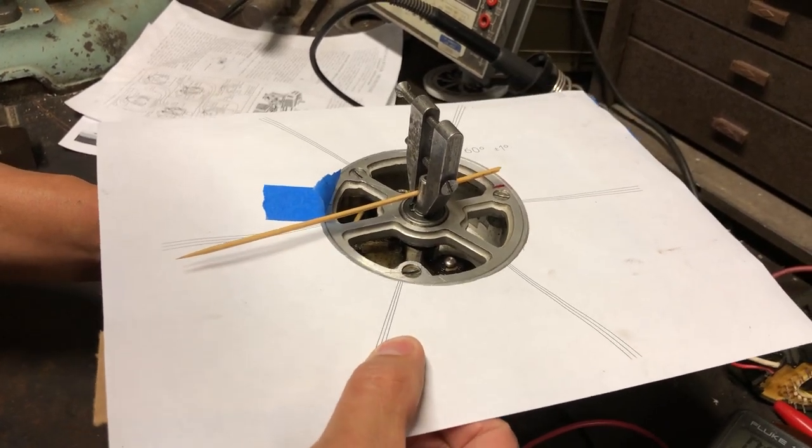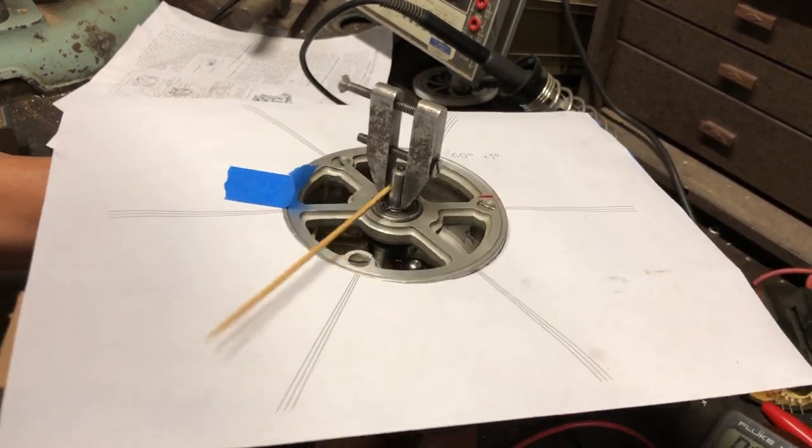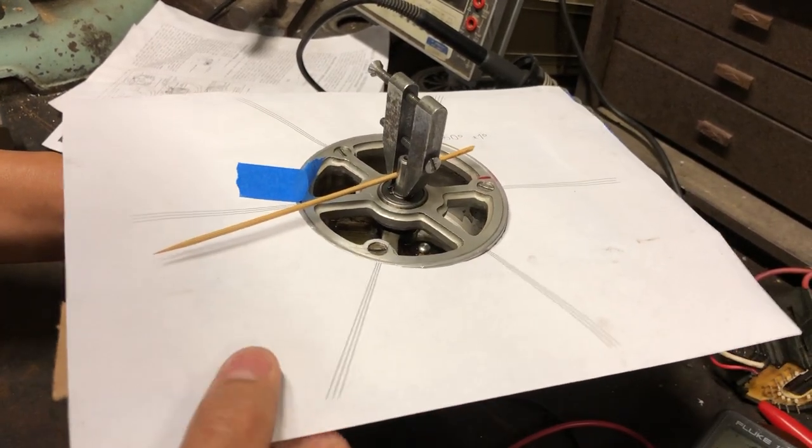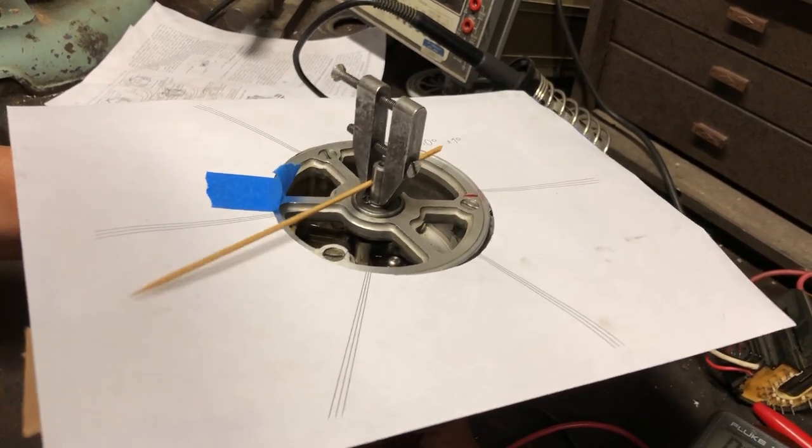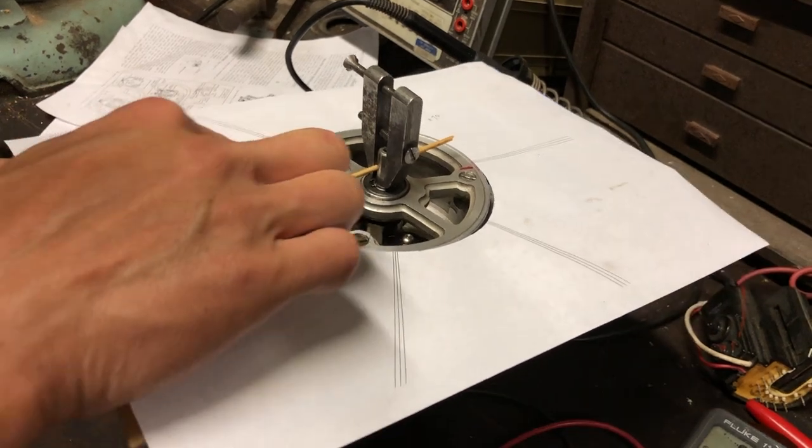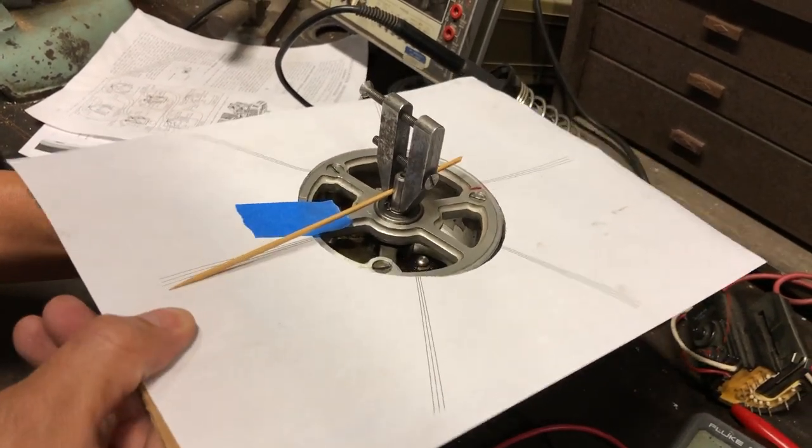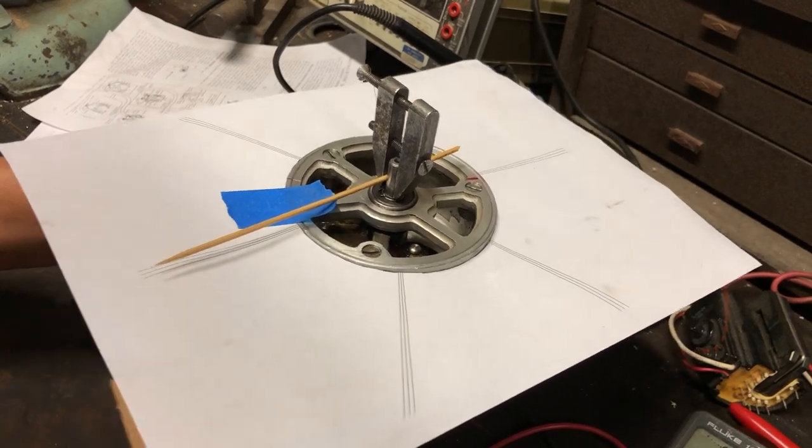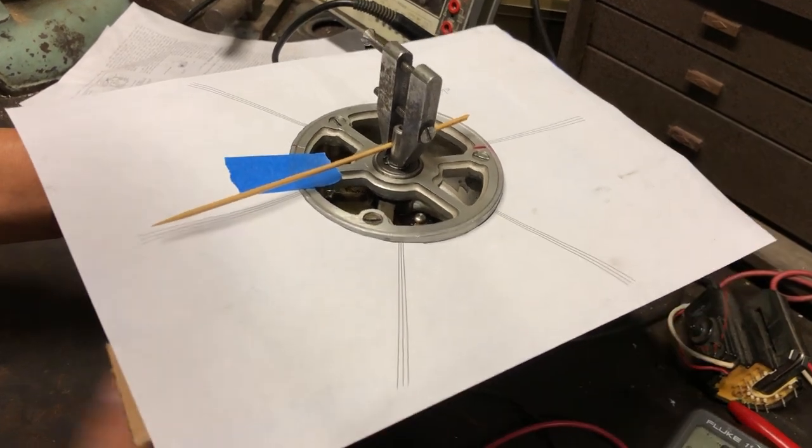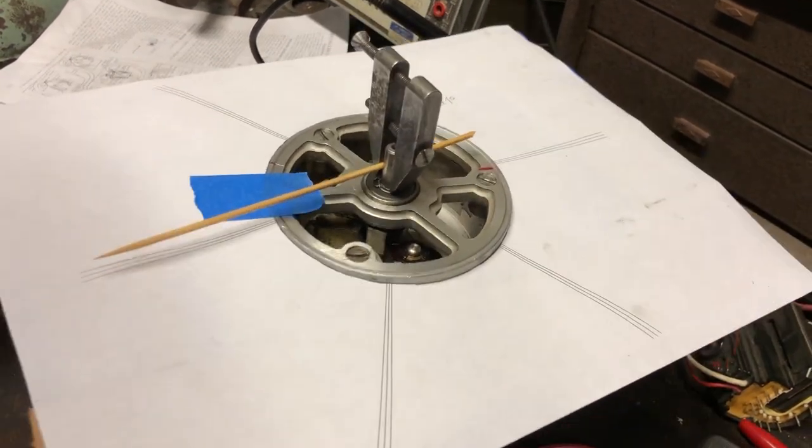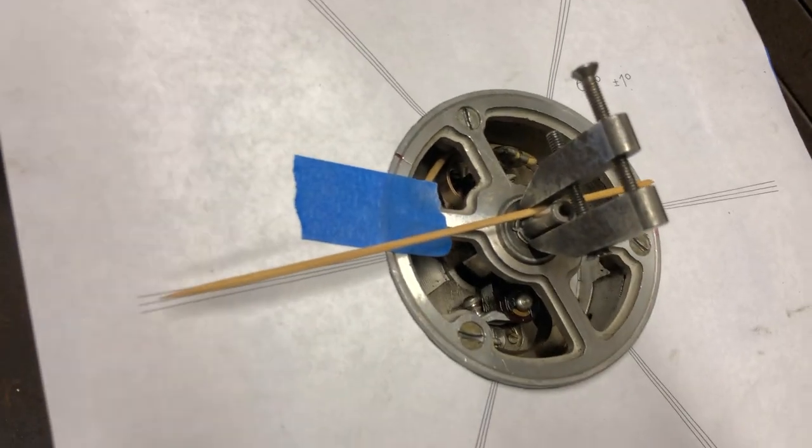So then I can take my jig and kind of rotate it around until I get a perfect spot where it opens, which is about there. Do it again. Yep, that's about right. So I'm going to tape this in place right in that spot. Right about there. Try it again. Okay, right there. That's right on the one. It's hard to see with parallax, but you can see that that's right on that spot.